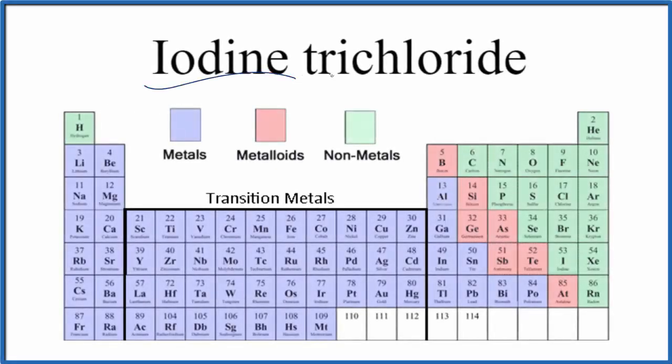Let's write the formula for iodine trichloride. The first thing we need to recognize is iodine right here - that's a nonmetal. Chloride, that means chlorine, that's also a nonmetal. So we have two nonmetals.